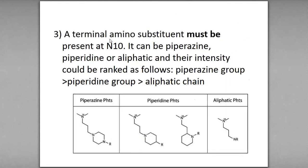A terminal amino substituent must be present at N10. The terminal amino at N10 can be piperazine, piperidine, or aliphatic. The side chain can be ranked with a piperazine ring, piperidine, or aliphatic terminal.